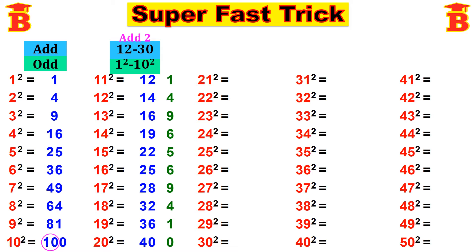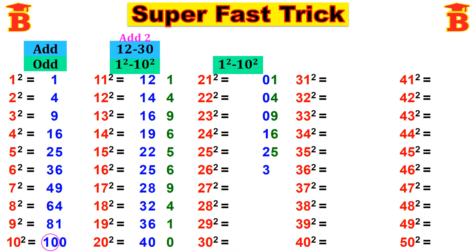Next let us find 21 squared to 30 squared. Here also the first step is the same: write 1 squared to 10 squared. Already we have those values, so take and write here: 01, 04, 09, then 16, 25, 36, 49, 64, 81, 100.